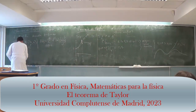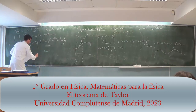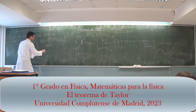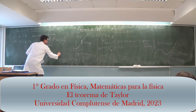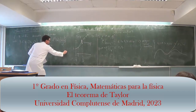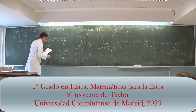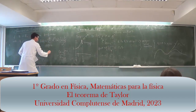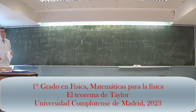Taylor's theorem gives us the error — the remainder. This is called the Lagrange remainder; there are other forms. The remainder is basically the next-order term: (X minus A)^(K+1) divided by (K+1) factorial, and now the key — the (K+1)-th derivative, which exists because I asked for it above, evaluated at C.